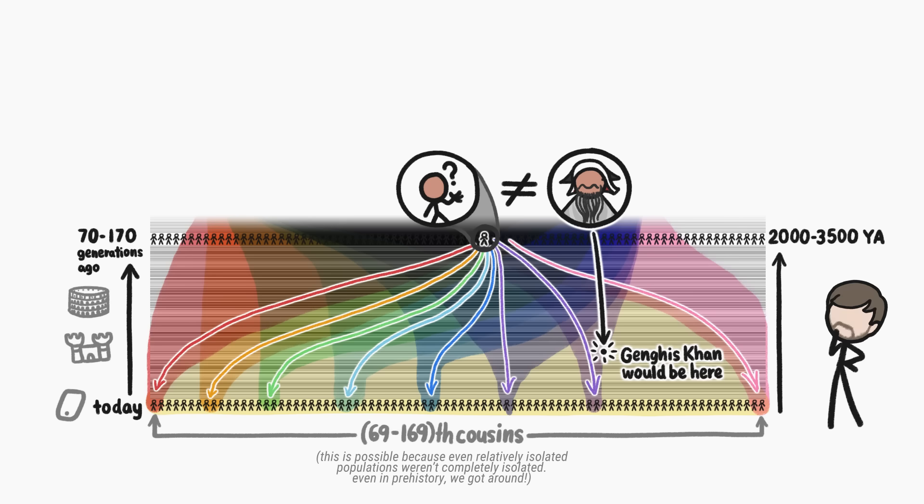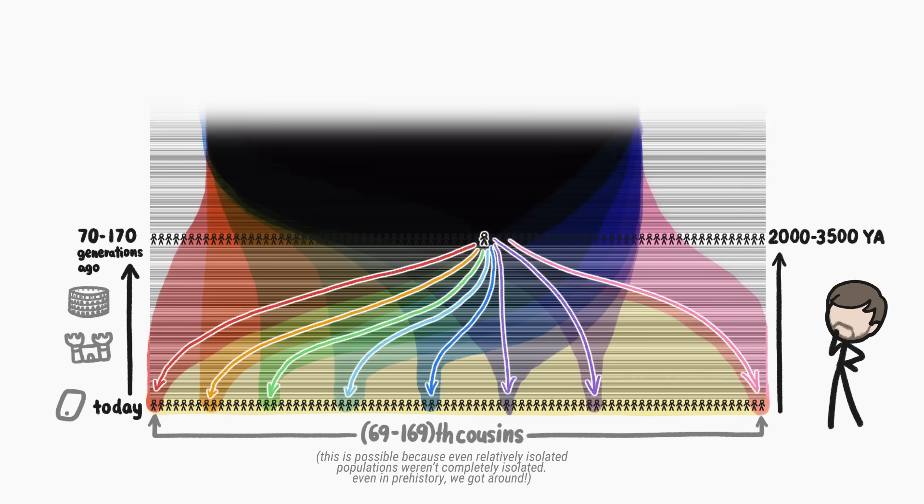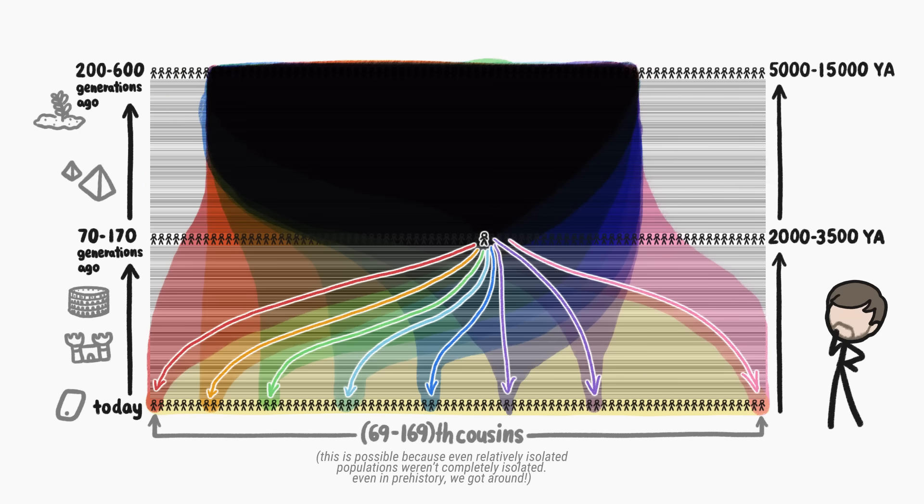And like on our hypothetical island, as we keep going backward in time, our lineages overlap more and more until eventually, somewhere between 5000 and 15,000 years ago, they become identical. That is, they overlap everywhere.